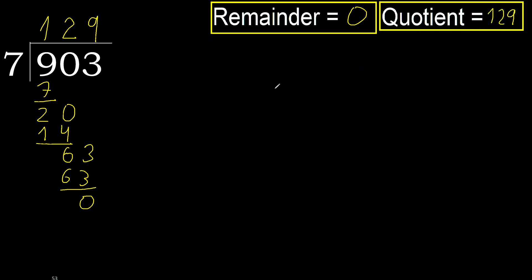Okay, remainder 0. Therefore, 903 divided by 7 is 129. See you later.